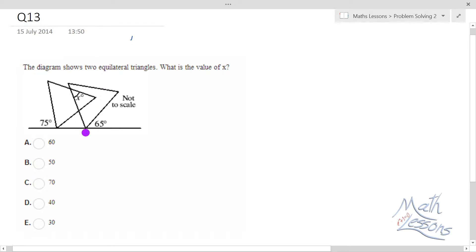In this diagram, we have two equilateral triangles, and we want to find the value of x here. So, if you have equilateral triangles, we know all these angles are 60.